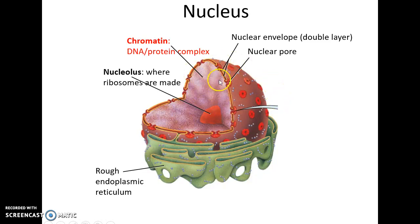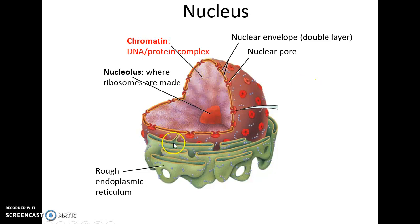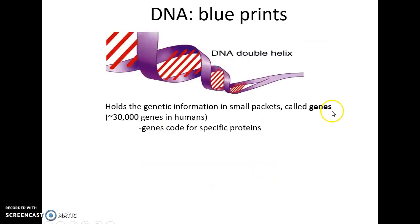The nucleus also shows nuclear pores, the nuclear envelope double layer, chromatin, and how the rough ER is formed off the nuclear envelope. DNA is a double helix that stores information in the form of genes. Each gene codes for a specific protein, and there are about 30,000 different genes in the human genome.